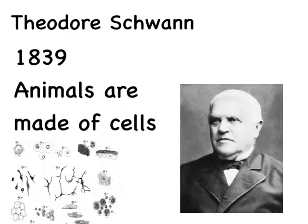Schleiden met up with his good friend Schwann, and they started to talk. Schwann had been looking at animals and he was also noticing that as he looked at all of these animals, they seemed to be made of cells. And so Schleiden and Schwann together are attributed with the idea that plants are made out of cells and animals are made out of cells. This is going to be the next important part of the cell theory.